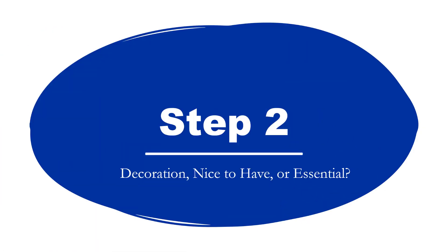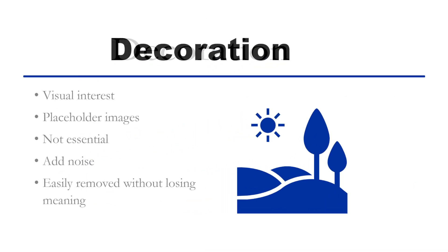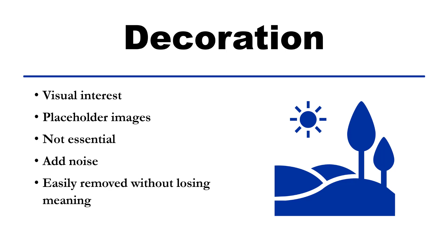Step two: decoration, nice to have, or essential. After you determine why you are sharing this image, ask what does it add to the content? Is it mainly for decoration, more nice to have, or is it communicating essential information for the user? Decorative images are there mainly on the page for visual interest and don't necessarily communicate nice to have or essential information to users. These might be placeholder images or elements like horizontal lines or other separators that aren't essential to understanding the content. Describing these types of images can add more noise to users listening to the content. A good test is to ask yourself: if the image wasn't on the page, can all users still understand the content? If yes, then it may be a decorative image.